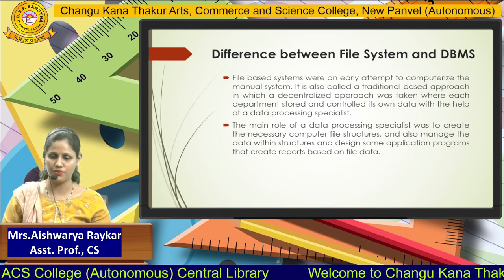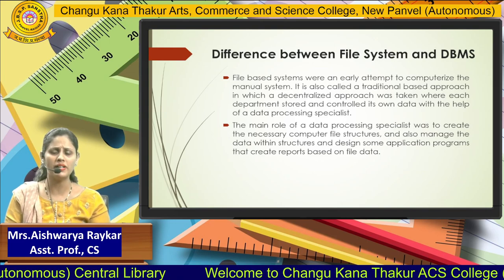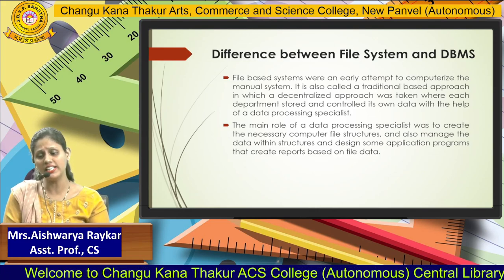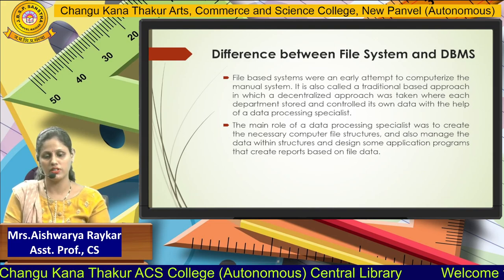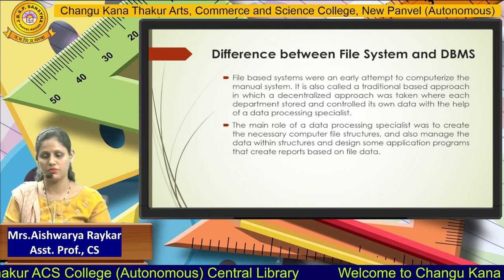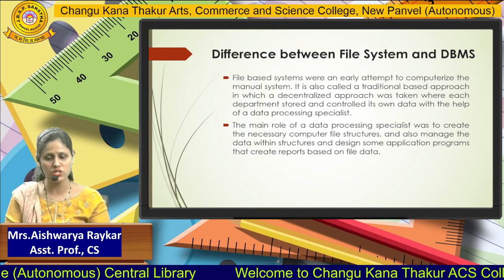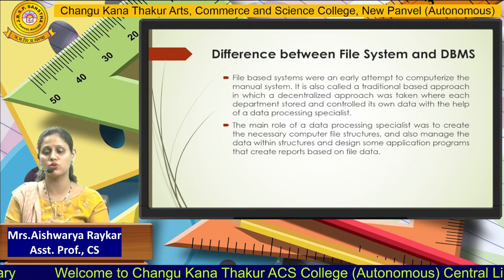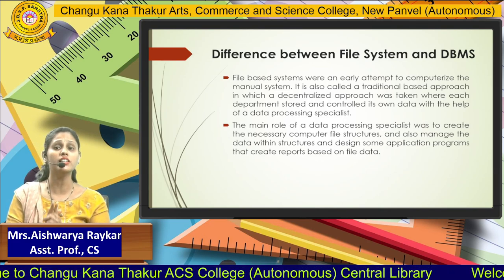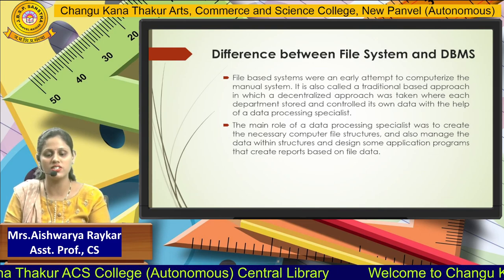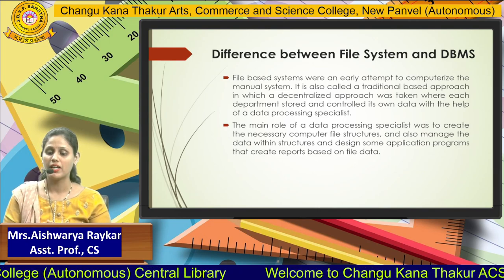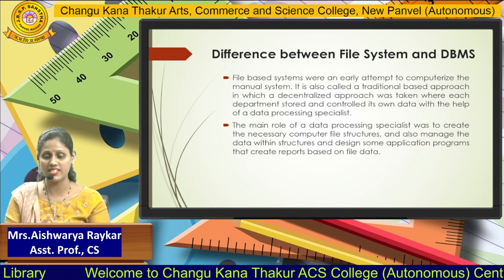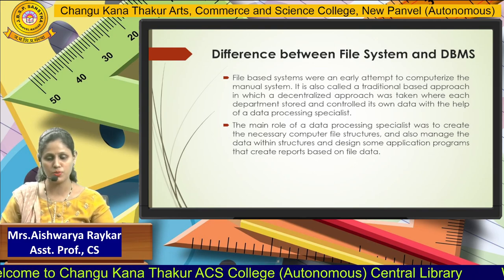Now let us look at the difference between file system and database management system. I can store data in a file system too, so why is there a need for a DBMS? File-based systems were an early attempt to computerize the manual system — that was the transition from manual to file-based, a traditional approach. It was a decentralized approach in which each department stored and controlled its own data with the help of a data processing specialist, who would create necessary computer file structures, manage data within that structure, design application programs, and create reports based on the file data.